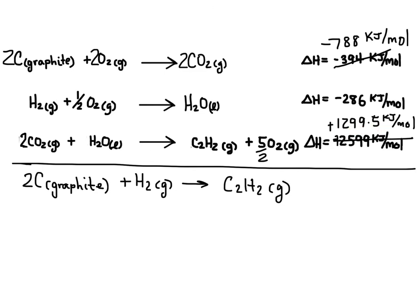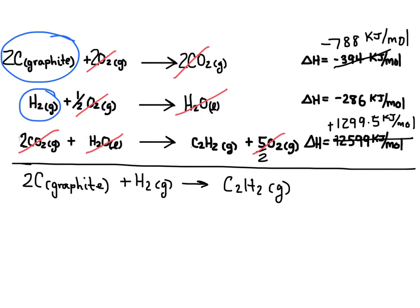Now I can cancel terms: two CO2's on opposite sides cancel, two and a half O2's (5/2) on opposite sides cancel, and the waters cancel as well. I'm left with two graphite, H2, and C2H2 — exactly what I want. Adding up all the enthalpies gives a total enthalpy change of positive 226 kilojoules per mole.